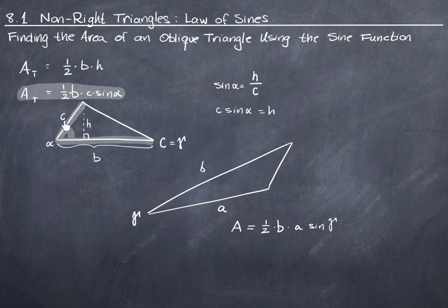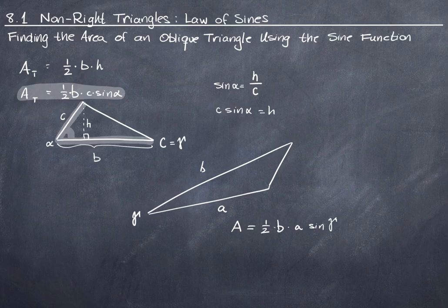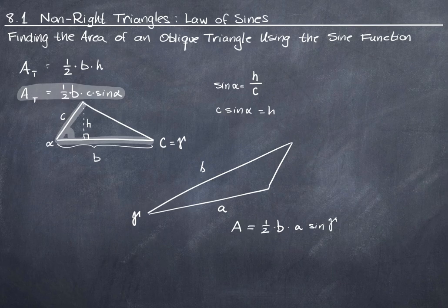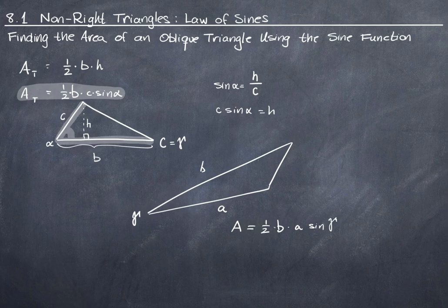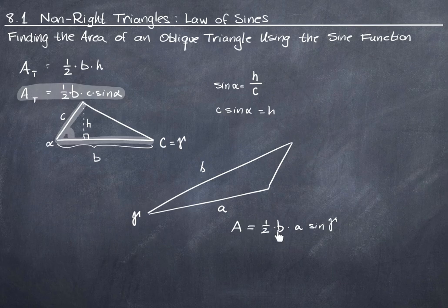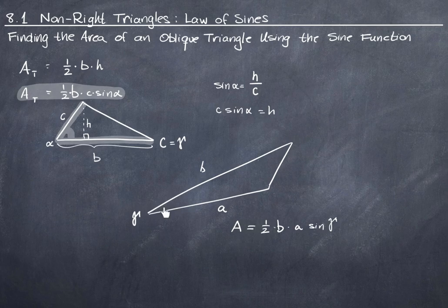So going back to this triangle, notice that I could take one-half times the length of b times the length of c times the sine of alpha, or I could take one-half times the length of c times the length of b, because multiplication is commutative. So all I really need to do is take one-half, multiply it by the sine of alpha, and then multiply the lengths of the two sides either side of alpha. So here I wrote that I have b times a, the length of the two sides, and then I'm going to take the sine of the angle inside, between these two, the included angle.